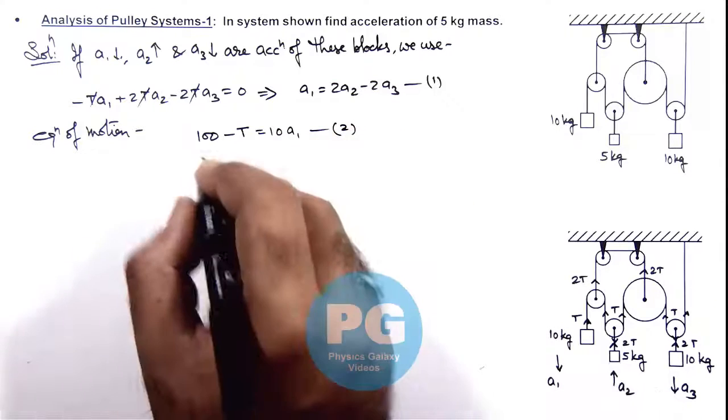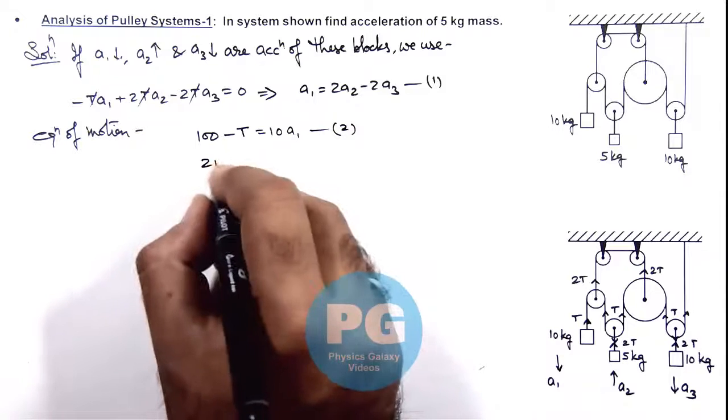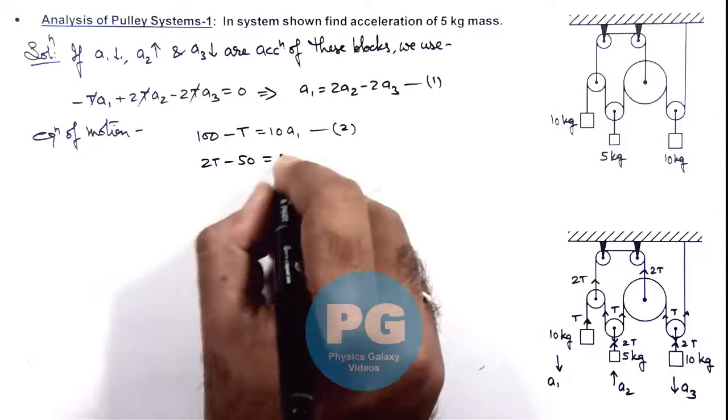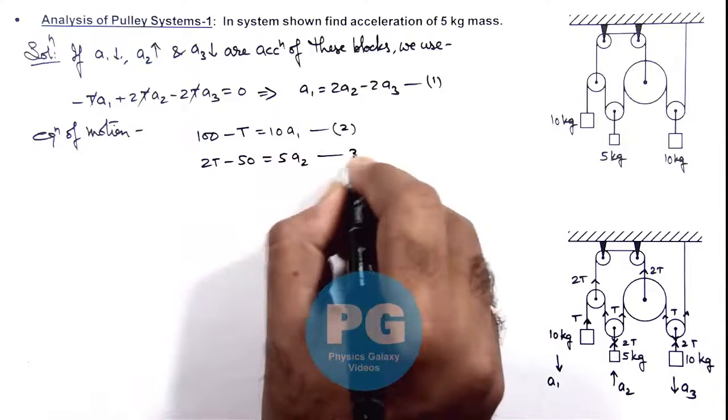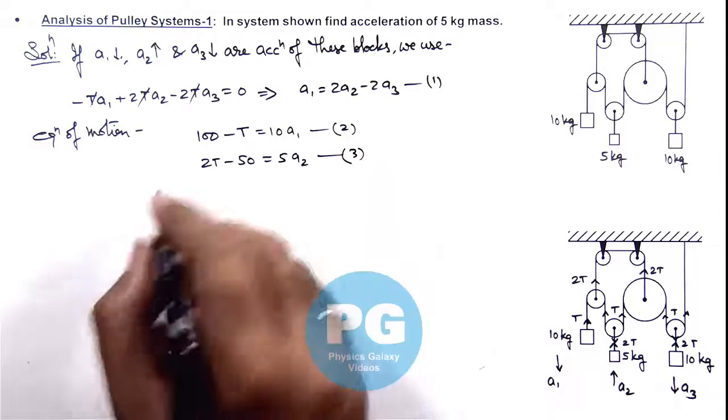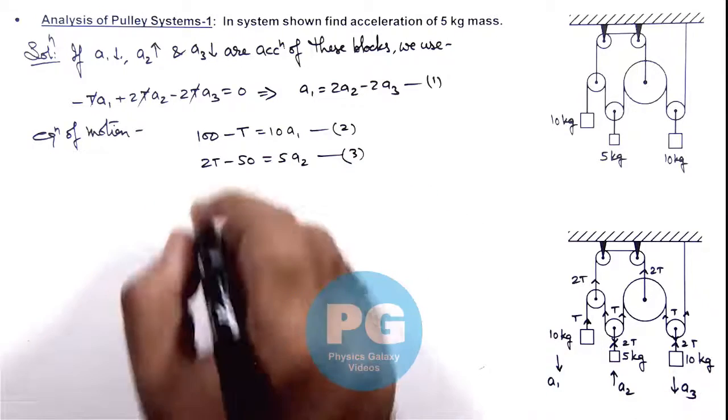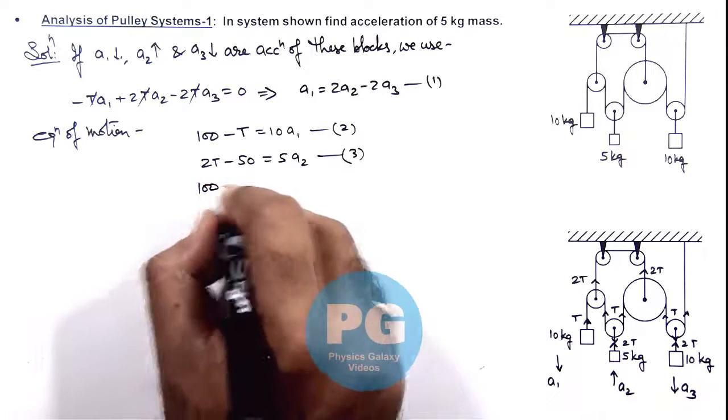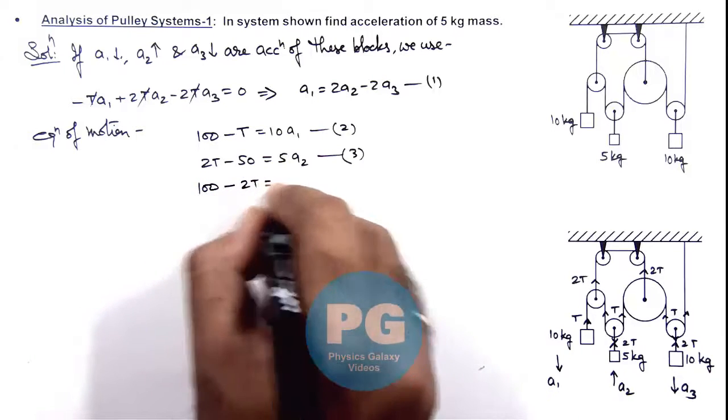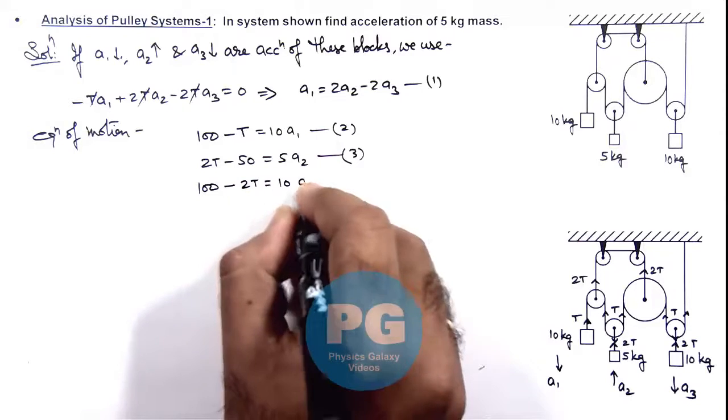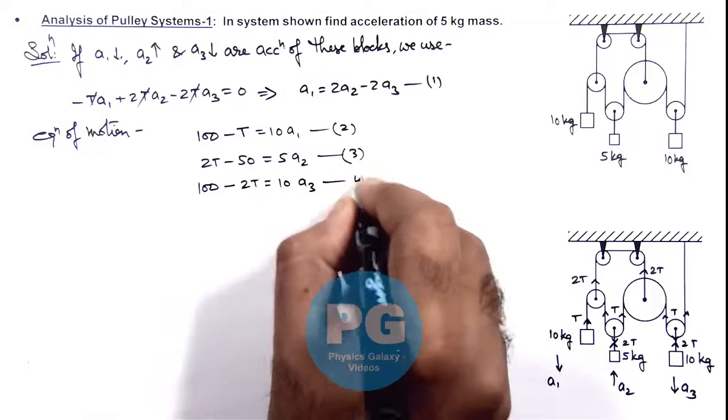For the 5 kg block, we can write 2T minus 50 equals 5a_y2. That is equation 3. For the other 10 kg block going down, we write 100 minus 2T equals 10a_y3. This is equation 4.